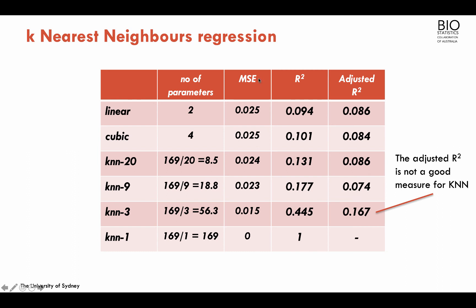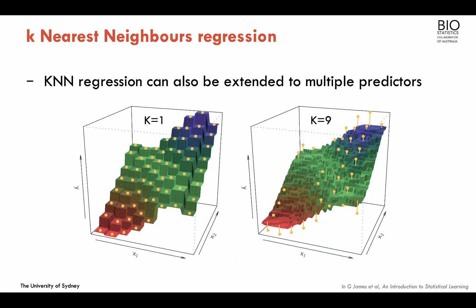We'll use cross-validation to estimate the correct mean square error using independent data. The idea of KNN can be extended to multiple predictors. With two predictors — for example, age and weight — rather than fitting a stepped line, we're now fitting a stepped surface. The more neighbors we consider, the smoother this surface will be.